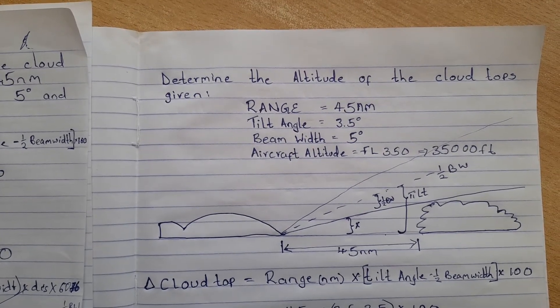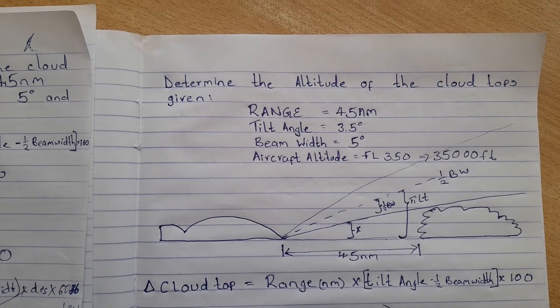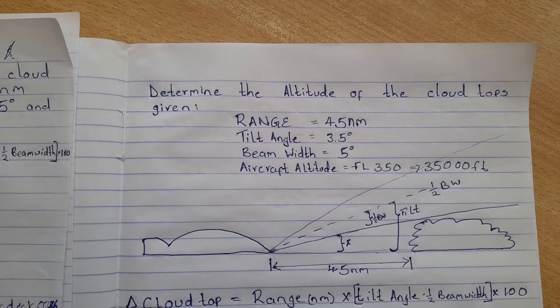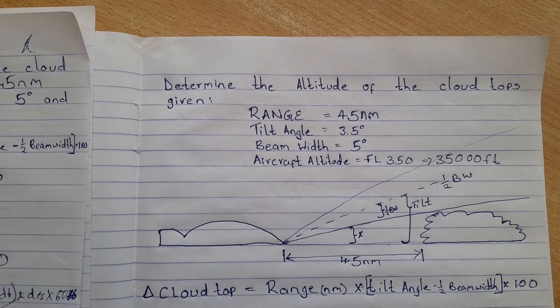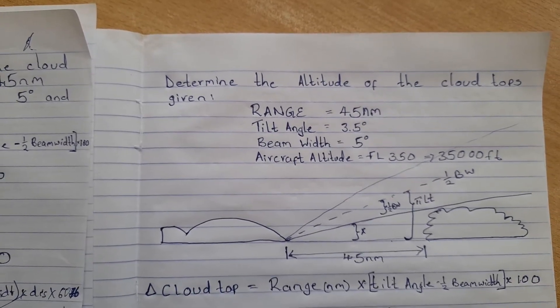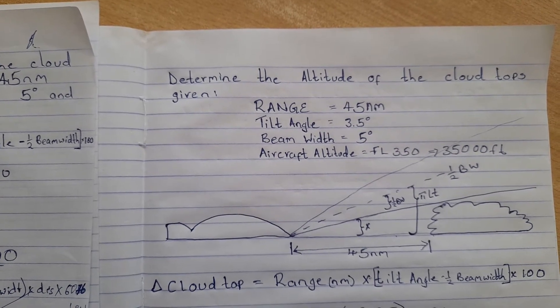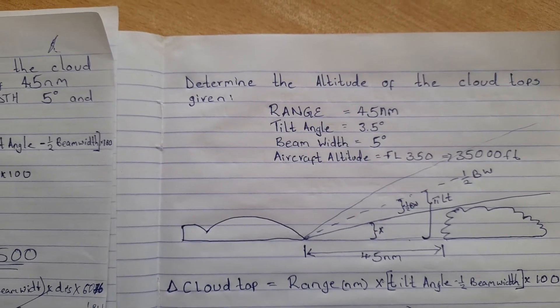So for you to get the top of the clouds you need to find the area that you have been marked as X, which will be gotten from the tilt angle minus the half beam width. To find the top of cloud, the difference from where you are to the top of cloud.